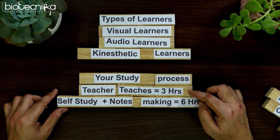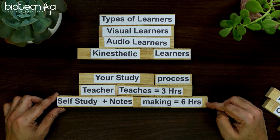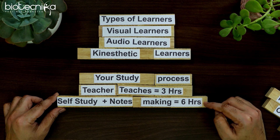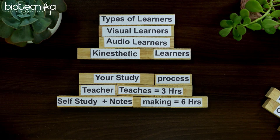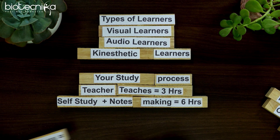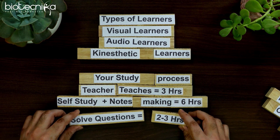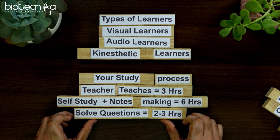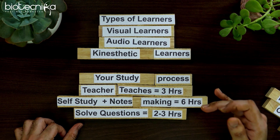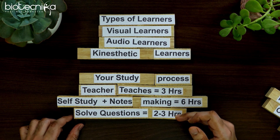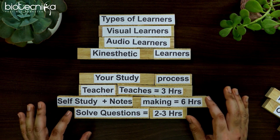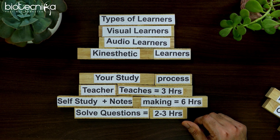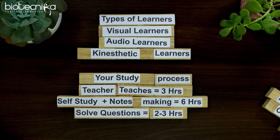Self-study plus note-making equals six hours — suppose the teacher taught you for three hours and then you study on your own and make notes for the next six hours for the same concept. Then, because you have a test series and exams are coming, you solve questions. So now you have studied, made the notes, remember everything, and solved questions. But after a few months, you will start forgetting. So what do you do? You revise — say, two hours per month — every month you take out two hours to study this concept.